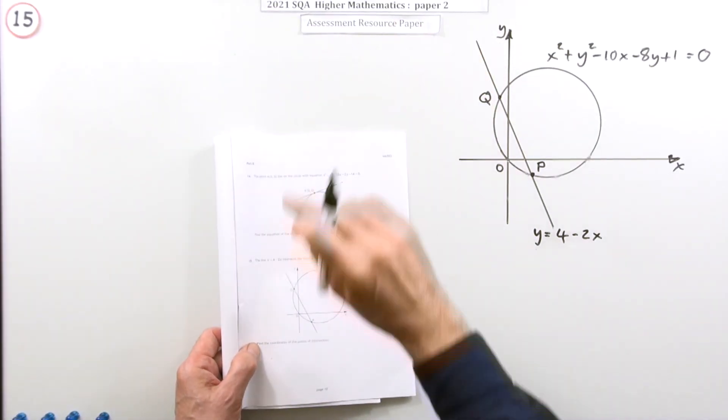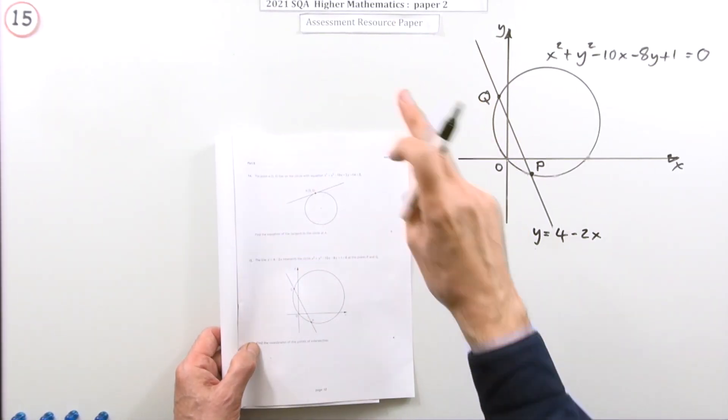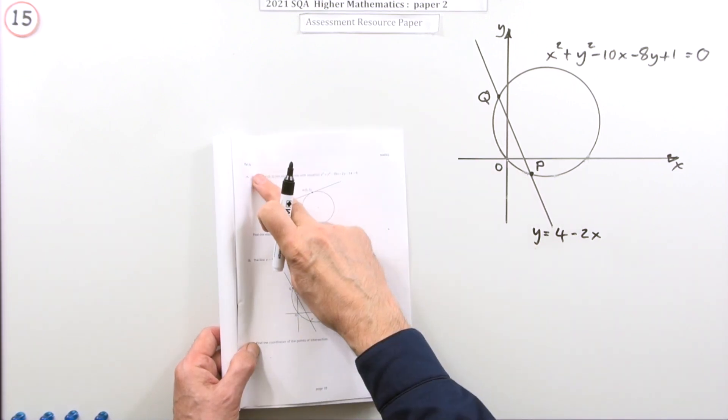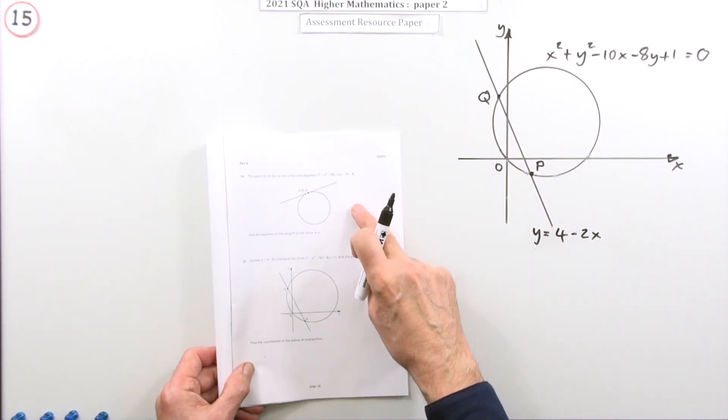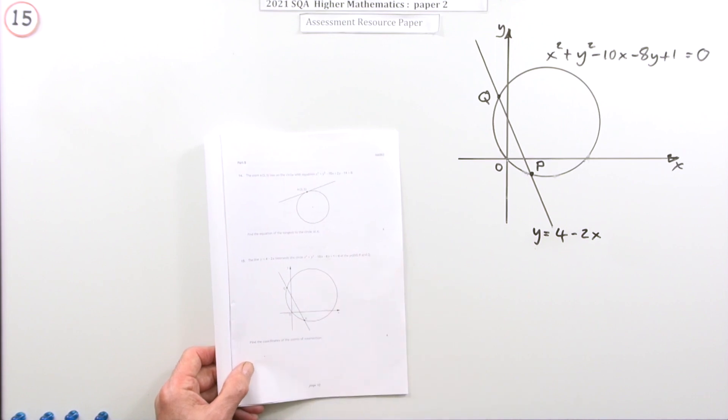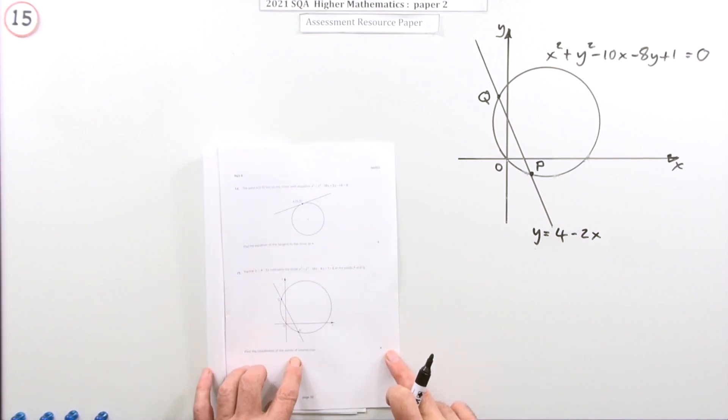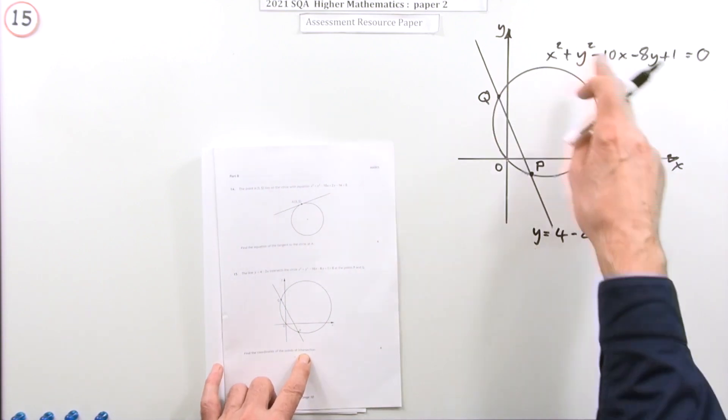So number 15 then from paper 2 of the 2021 Higher Maths. It's the resource paper, part B, the logs and circles section. Circles again for question 15. It's just a little four mark question on finding the points of intersection of a line and a circle.